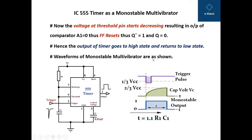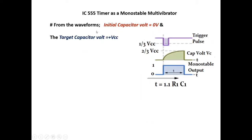The waveforms of monostable multivibrator are as shown: three different signals. One is the trigger pulse — the negative going triggering pulse — according to which the output is going from 0 to 1. It remains 1 unless the capacitor is charged to the value of 2/3 VCC, and as it reaches 2/3 VCC, the output comes back to 0. The initial capacitor voltage was 0 volts and the target capacitor voltage is plus VCC, because it is charging through the supply VCC. It is not going beyond 2/3 VCC.